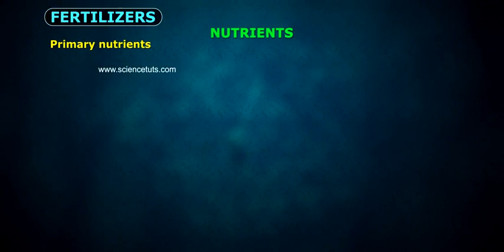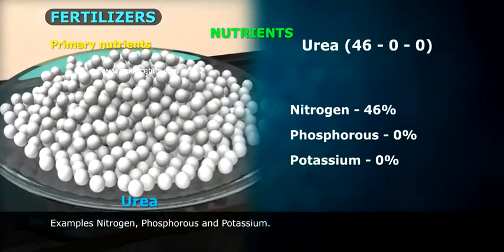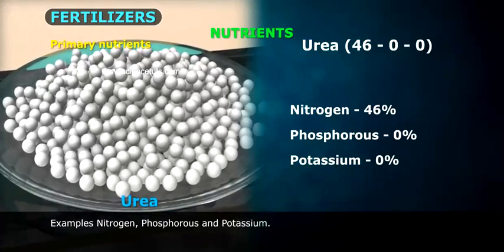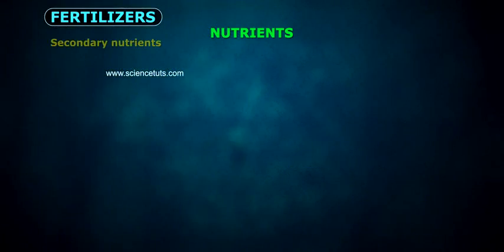Primary nutrients examples are nitrogen, phosphorus, and potassium.